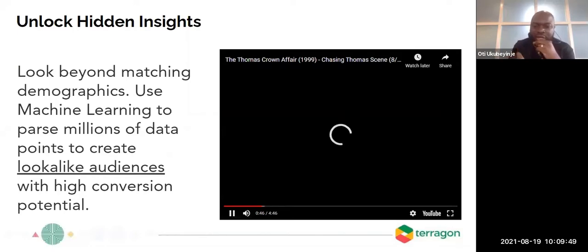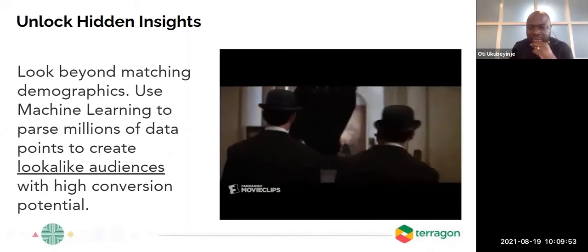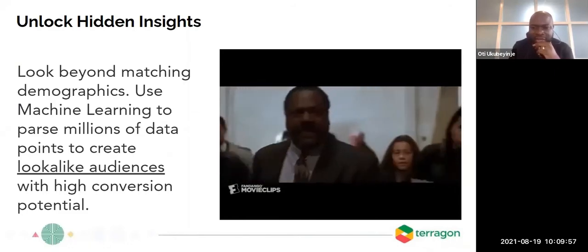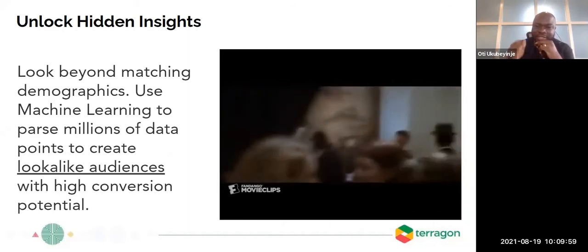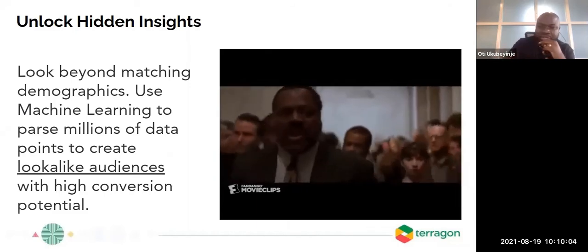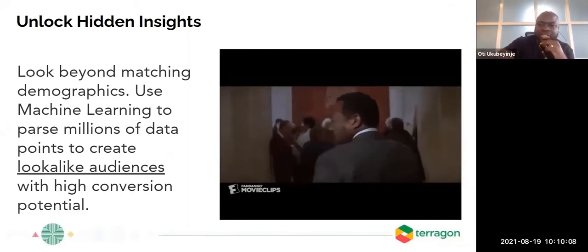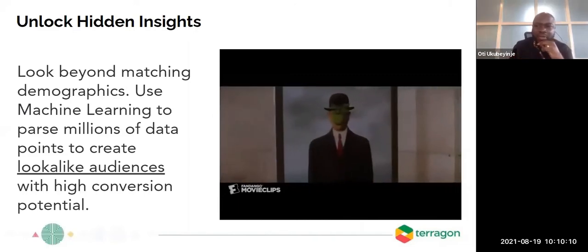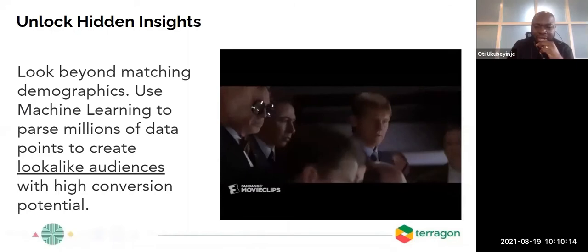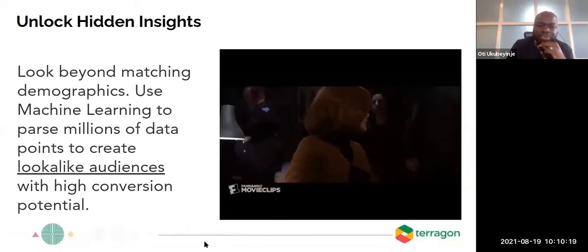The last part is lookalike audiences. I'll play this quick video — it's from a scene in a movie called Thomas Crown Affair. What happens is Thomas Crown creates lookalikes of himself in different ways and the cops are chasing different people. Anytime I think about lookalike audiences, this is the same memory I have. Go watch it — very interesting.